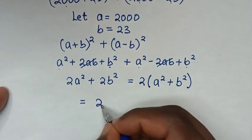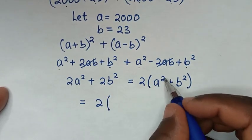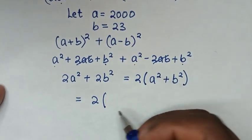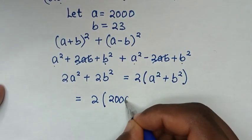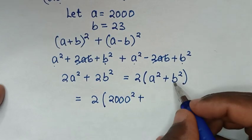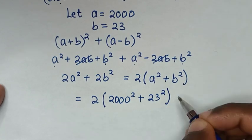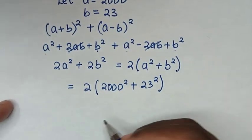So 2000² is 4,000,000, and 23² is calculated next.